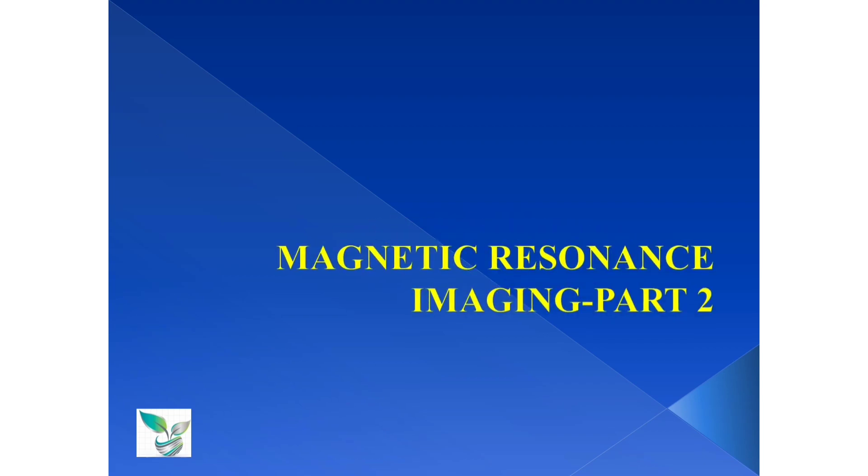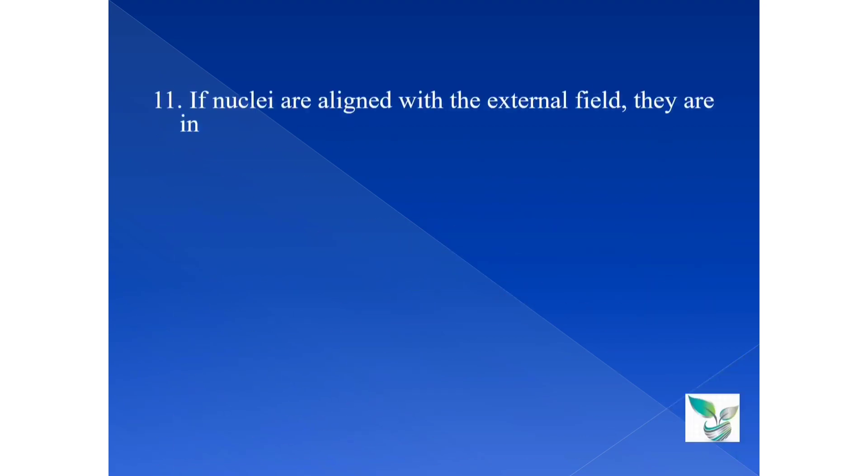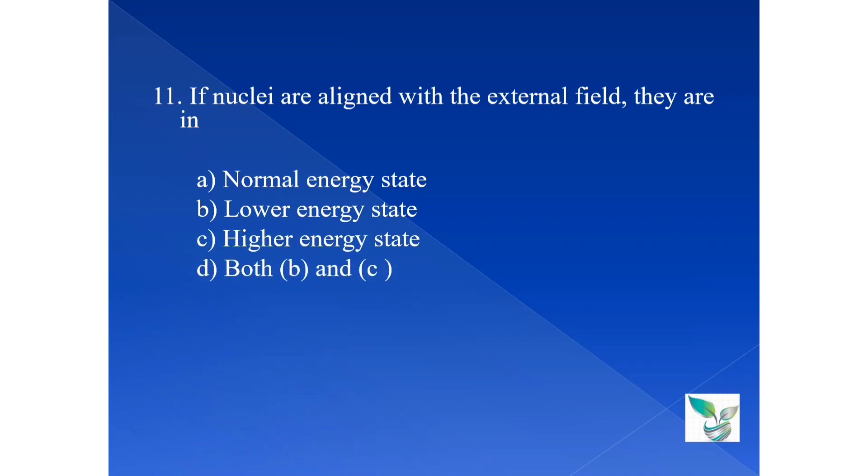Moving on to the next question. If nuclei are aligned with the external field they are in: option A normal energy state, option B lower energy state, option C higher energy state, and option D is both B and C. If nuclei are aligned with the external field, that is along the main magnetic field, the answer is option B lower energy state.